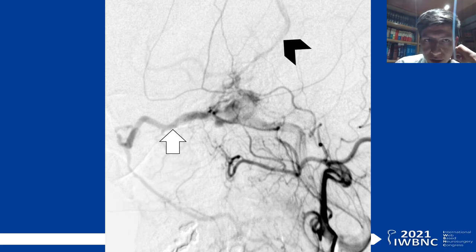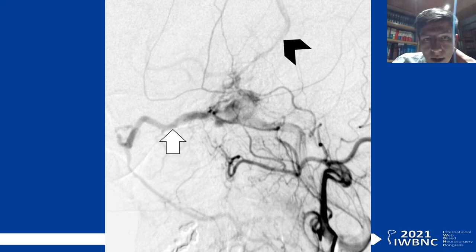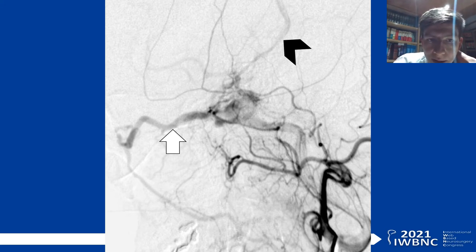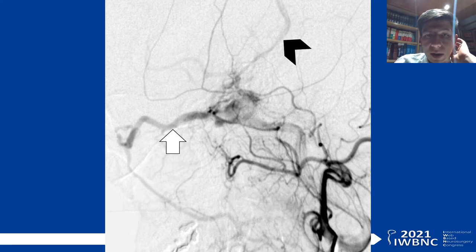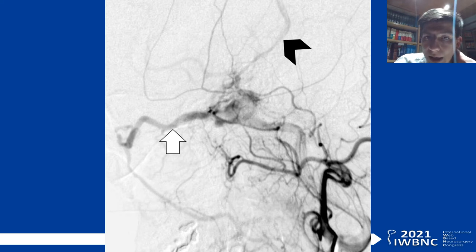In this lateral projection, we could see the relationship of the venous flow. Here we see with the white arrow the superior ophthalmic vein and its venous drainage relationship, and principally the cortical venous reflux indicated with the black arrow.